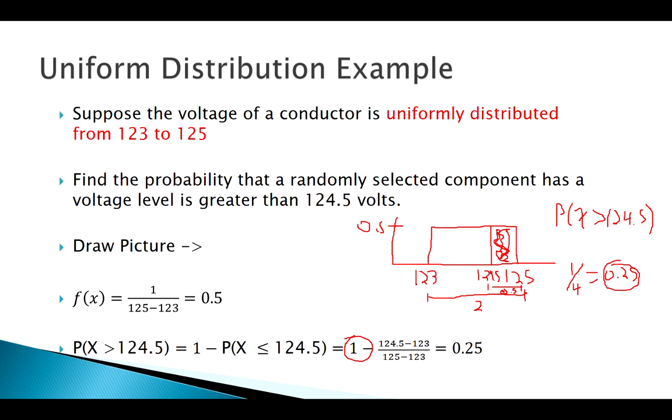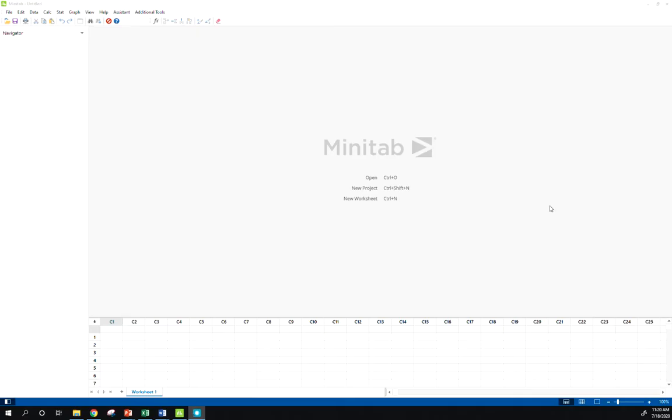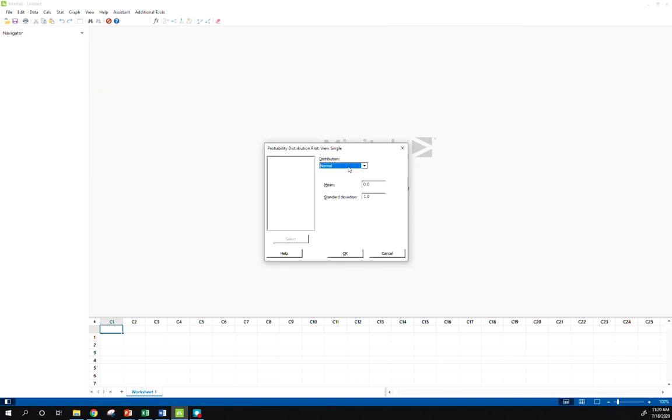We can also use technology to do this. Let's see how we might do this in Minitab. I'm over here in Minitab. If I go to Graph, Probability Distribution Plot, View Single. By default, it's on the normal. It's got discrete and continuous distributions. Right now, we're using the uniform. This uniform goes from 123 to 125. So I'm going to click OK.